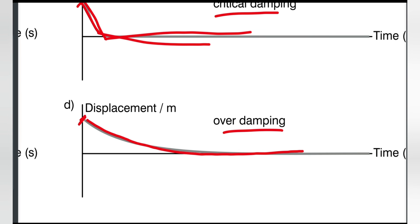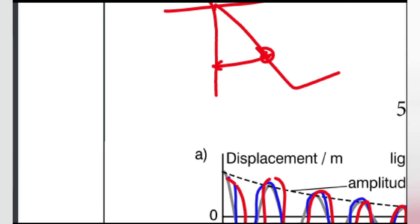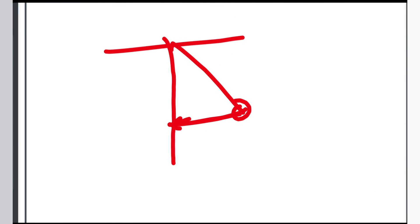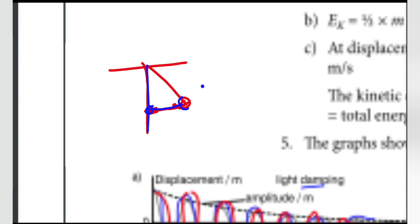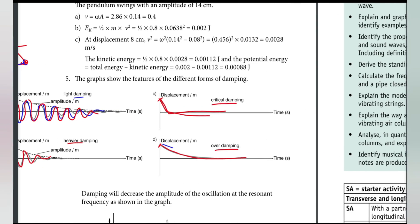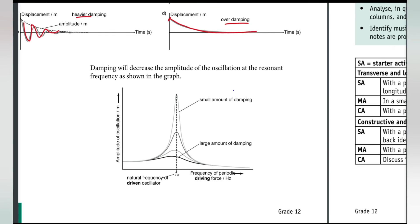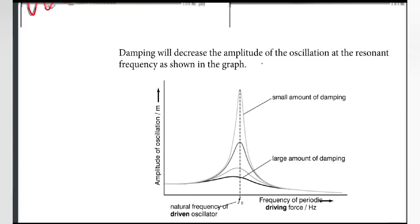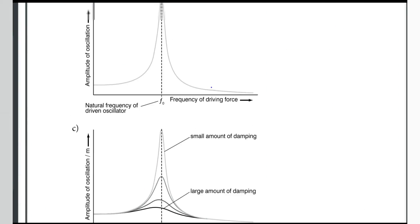Overdamping occurs when the damping is greater than critical damping. The system returns to equilibrium more slowly than critical damping, without oscillating. Overdamping is critical in certain systems where overshoot must be avoided.